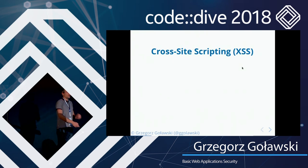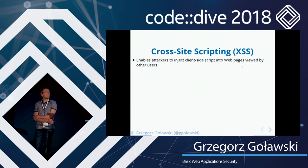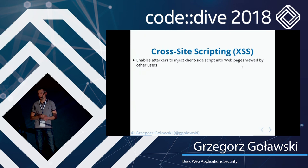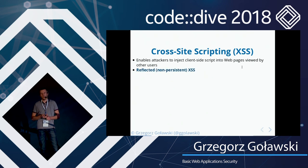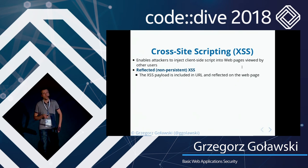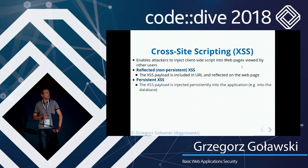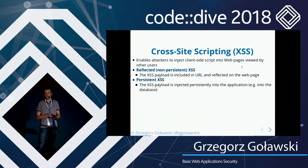The next vulnerability is cross-site scripting (XSS). It's a vulnerability that enables attackers to inject client-side code — usually JavaScript — into web pages viewed by users. There are actually three types, but I'll talk about two: reflected (non-persistent) XSS, where the payload is included in the request itself such as in the URL; and persistent XSS, where the payload is stored persistently in the application and appears in all web pages viewed by all users.